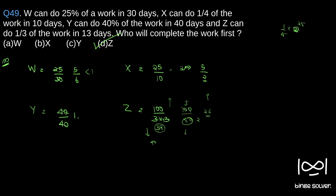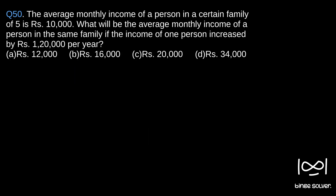Question 50: The average monthly income of a person in a certain family of five is rupees 10,000. What will be the average monthly income of a person in the same family if the income of one person increased by rupees 1,20,000 per year? Since the average was 10,000 for 5 people, the total income earned by that family was average into 5.